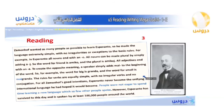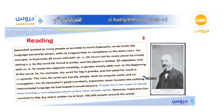To create the opposite meaning, a speaker simply adds 'mal' to the beginning of the word. So the word for big is 'granda' and the word for small is 'mal granda'. The rules for verbs are equally simple, with no irregular verbs and no conjugation. For all Zamenhof's good intentions, Esperanto never became the unifying international language he had hoped it would become. However, Esperanto has survived to this day and is spoken by at least 100,000 people around the world.